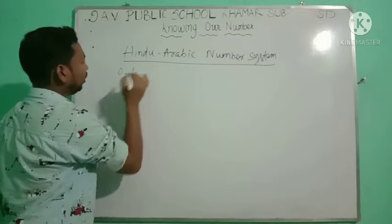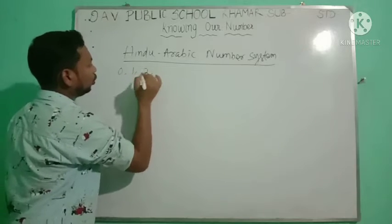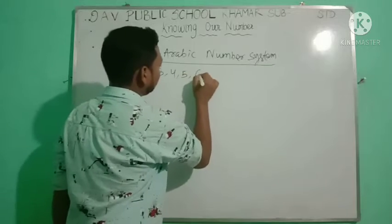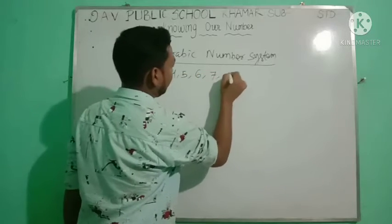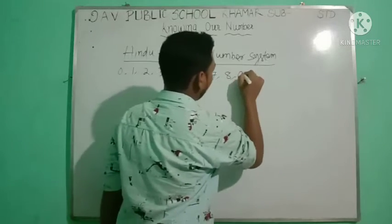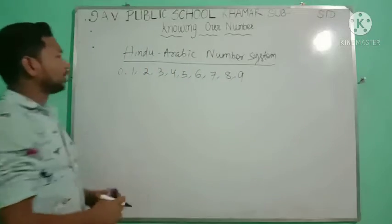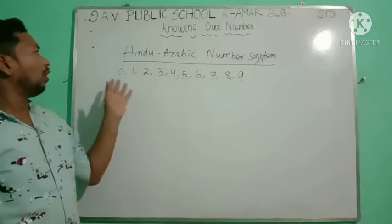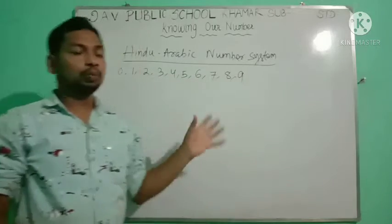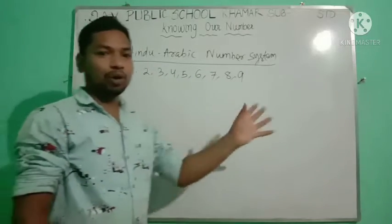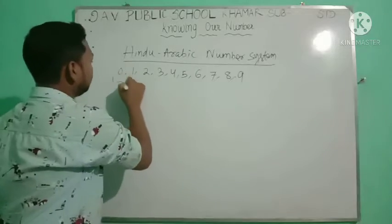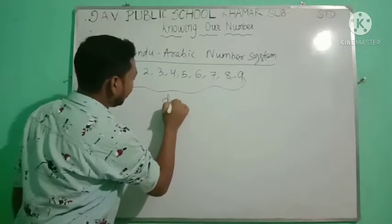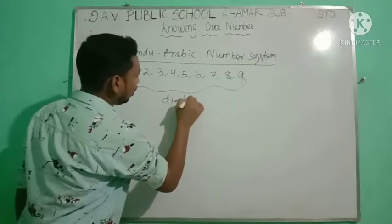What are they? Zero, one, two, three, four, five, six, seven, eight, and nine. These are the ten symbols which we are using — our Hindu-Arabic numerals — to form numbers.